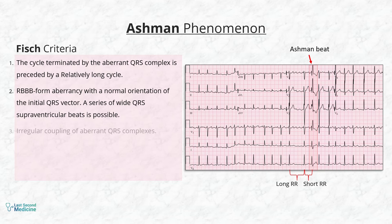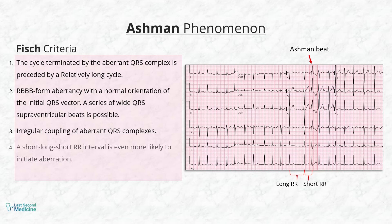Third, irregular coupling of aberrant QRS complexes — that is, the Ashman beats occur at irregular intervals. Fourth, a short-long-short R-R interval sequence is even more likely to initiate aberration. And fifth, lack of a fully compensatory pause.